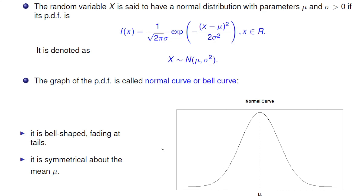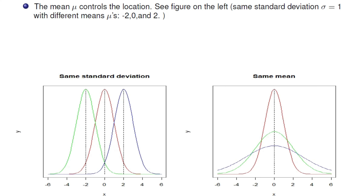Based on this graph, we can see that there are two parameters: one is mu, the other is the standard deviation sigma. The mean mu controls the location — it is the location parameter. If you look at the figure on the left, there are three bell curves that share the same standard deviation sigma equals one, but their means are different: negative two, zero, and two. As you can see, they are of exactly the same shape but their locations are different. The green curve is centered at negative two, the red one at zero, and the blue one at two. So mu is the location parameter.